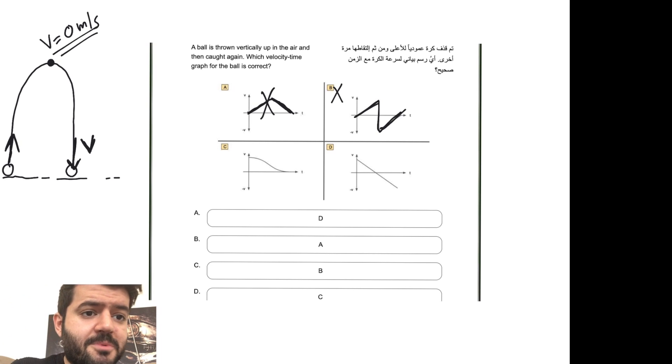Let's go to option C. We're starting off with an initial velocity, so far it makes some sort of sense. Then the velocity is gradually going down but in a curved fashion. Now this is wrong because...